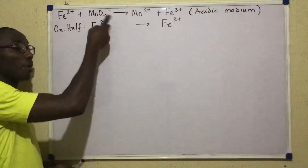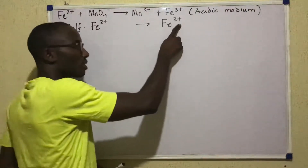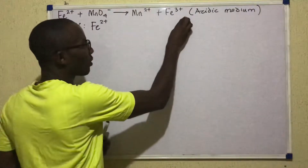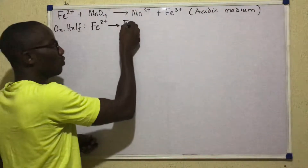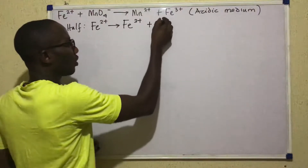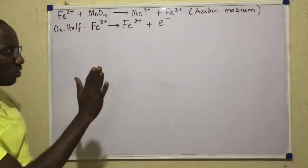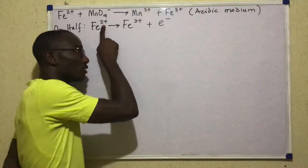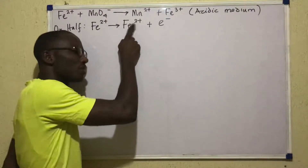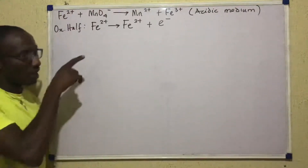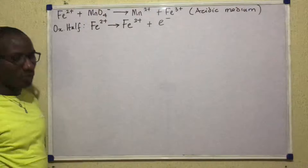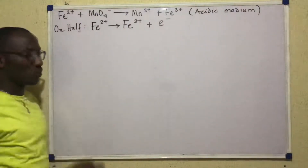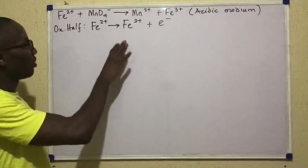In the oxidation half, I'll write Fe2+, then on that side I'll have Fe3+. How does Fe2+ become Fe3+? The 2+ tells us that the protons are more than the electrons by two. On that side, the protons are more than the electrons by three. The only way that could happen is if Fe2+ loses an electron. So the electron lost has been put here: Fe2+ → Fe3+ + e−. Oxidation is electron loss, and that's what we're seeing.